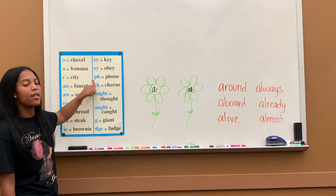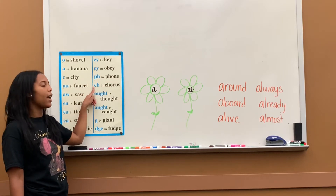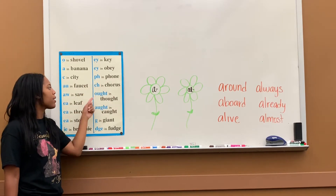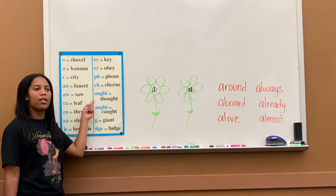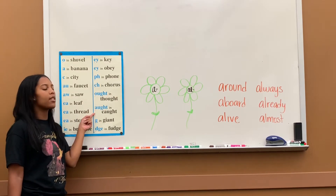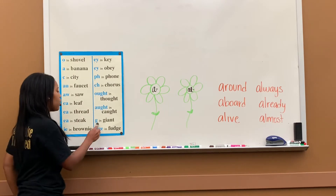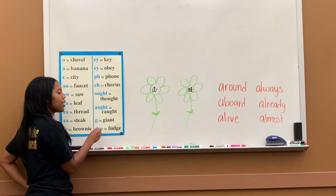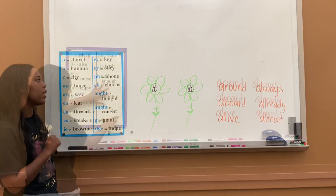PH says f in phone. CH says k in chorus. OUGHT says ought in thoughts. AUGHT says ought in caught. G says j in giant. DGE says j in fun.